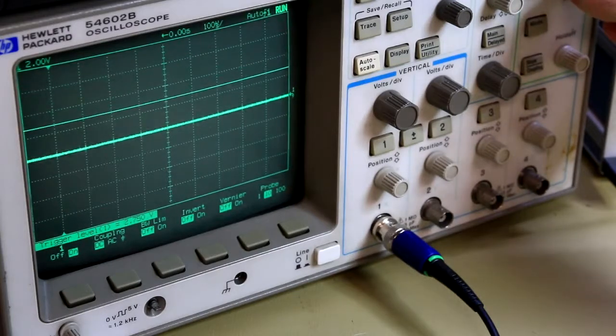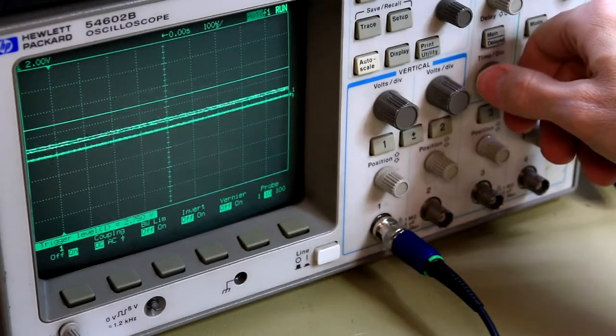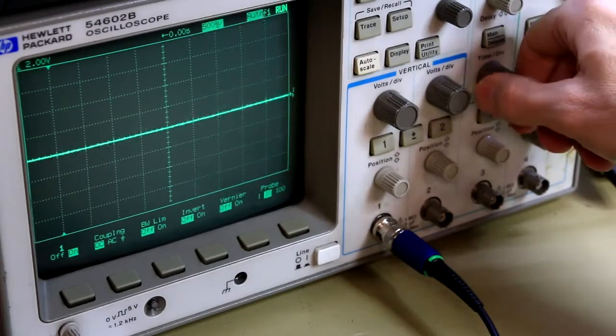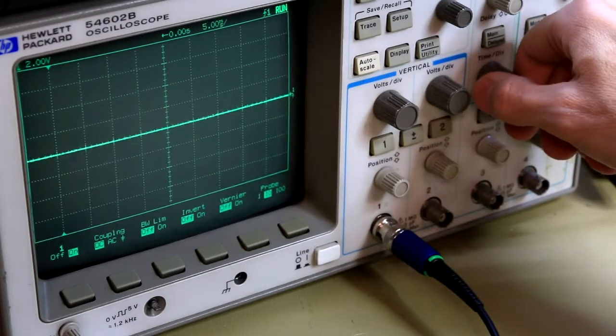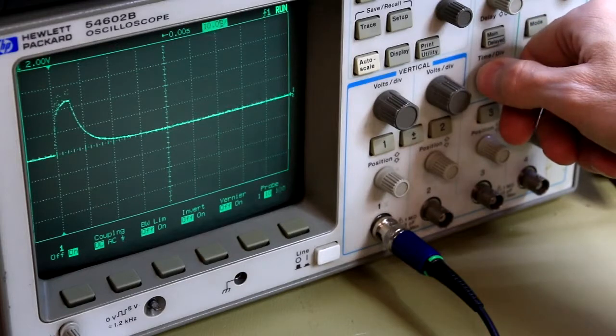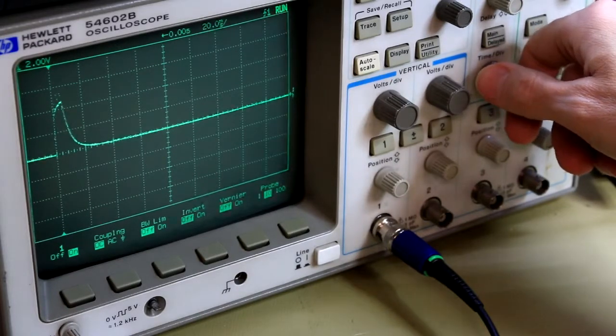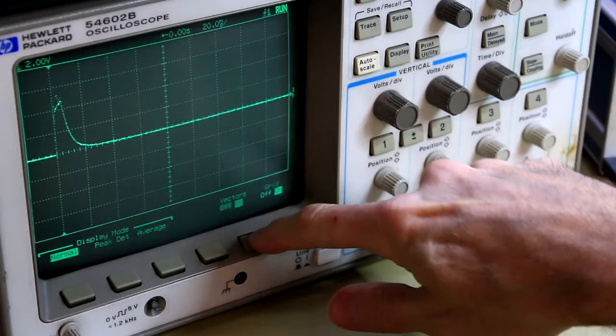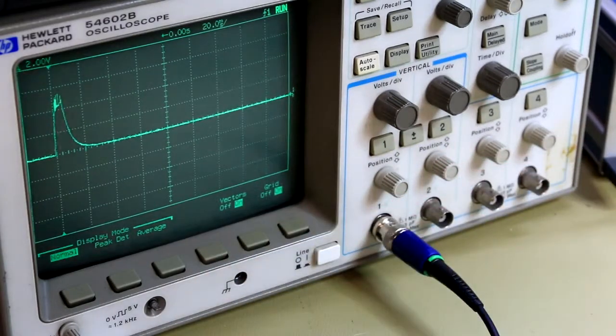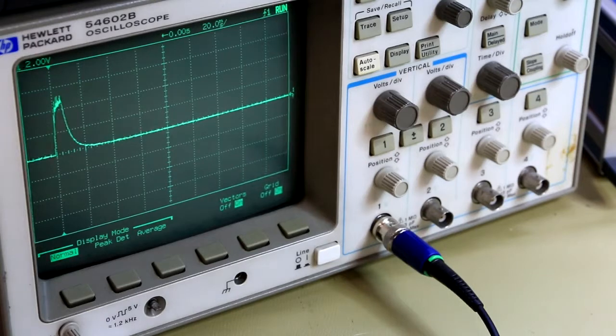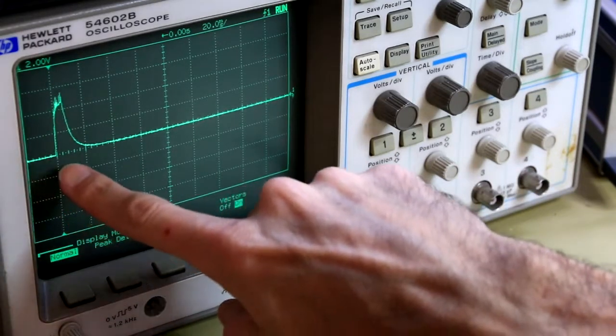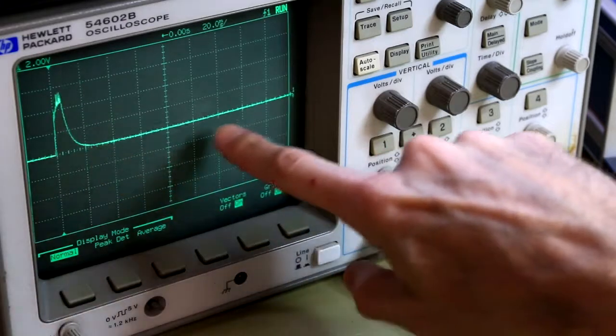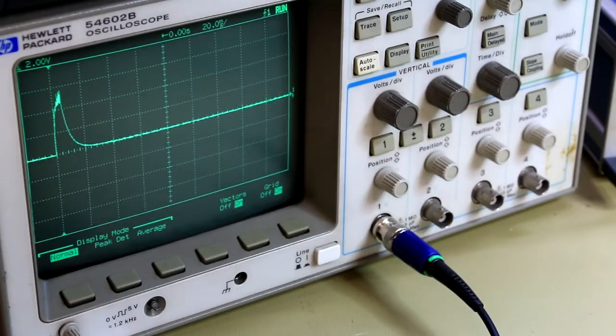See if we can trigger on this. That does not look good. There we go, that's the problem. So you can see it's spiking right up to five volts and then shutting down again. So there's definitely something wrong with this power supply in that it cannot deliver five volts at some sort of a load.